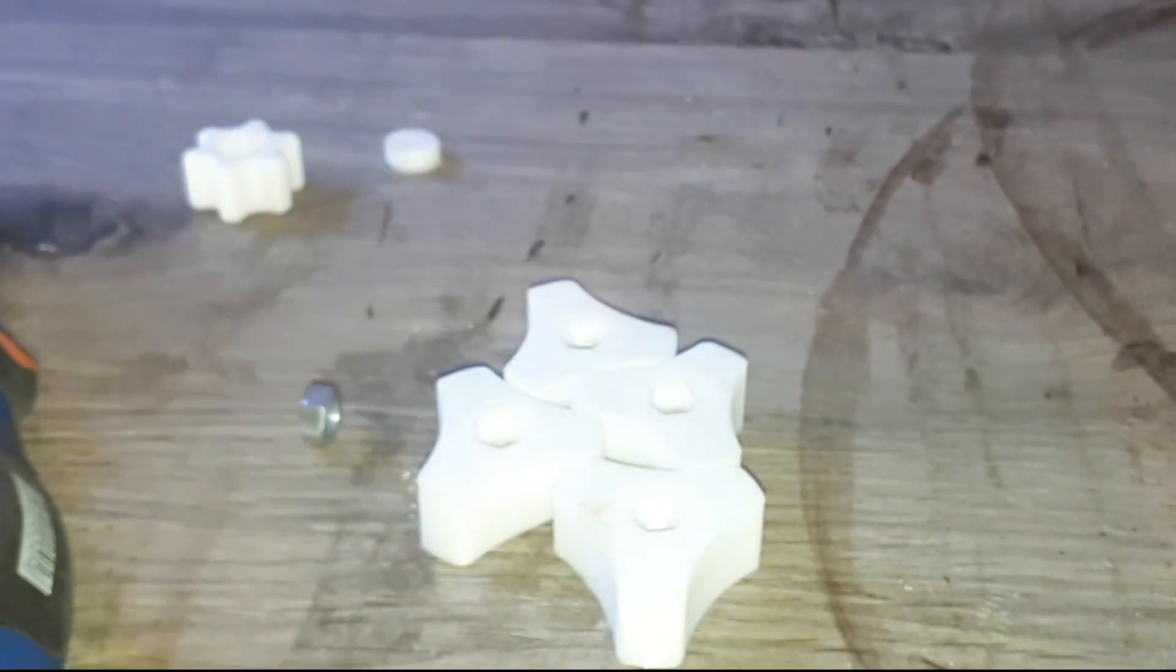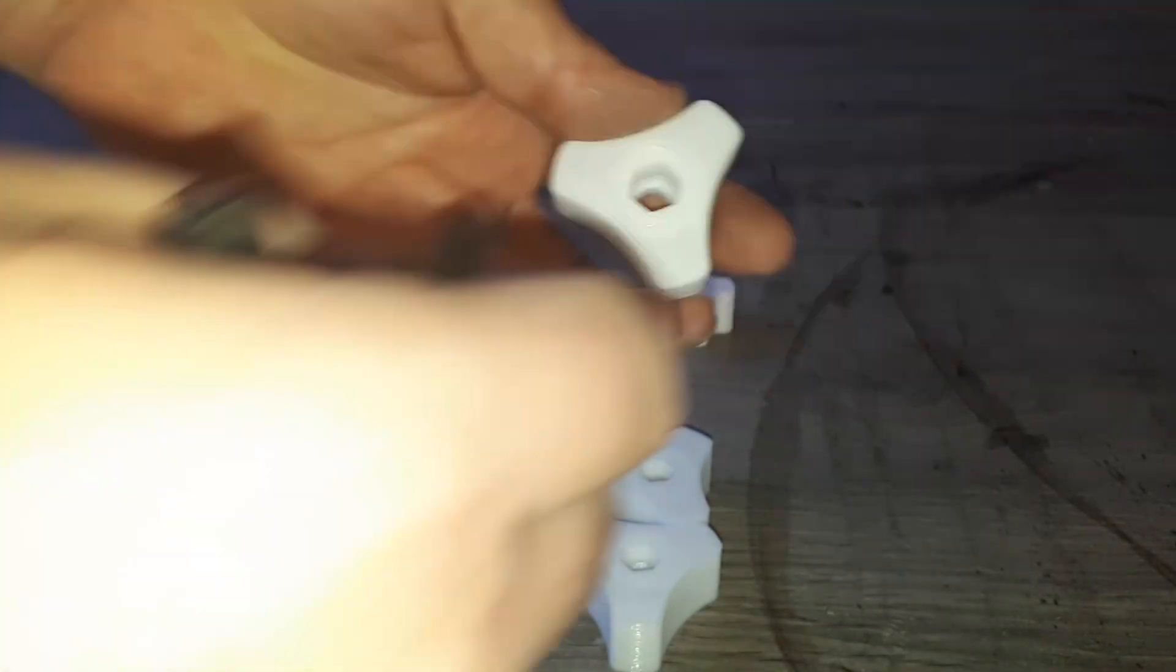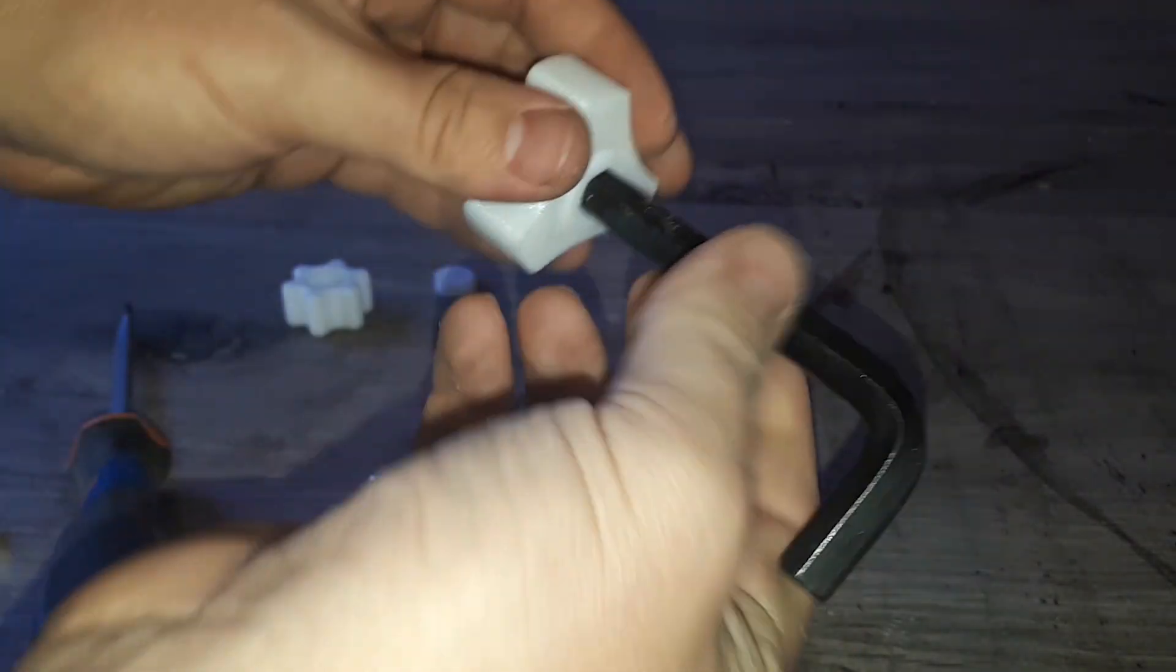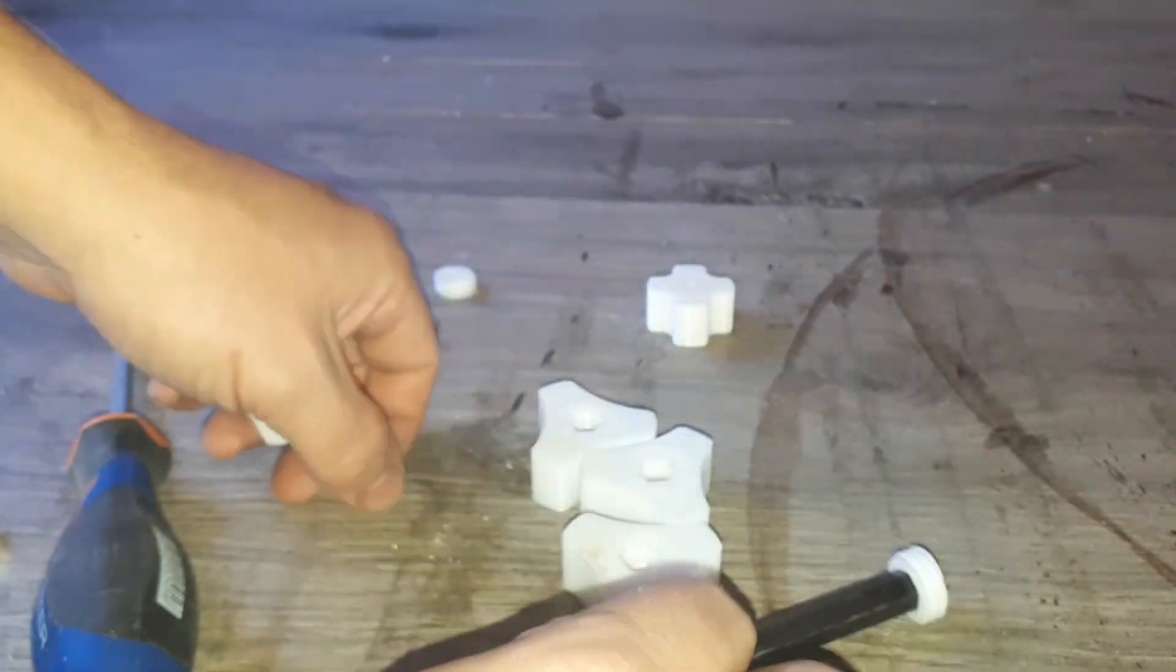And for the last version, I eventually kept only three branches and made a cover with a hole inside so this way I can also put nuts inside that knob.